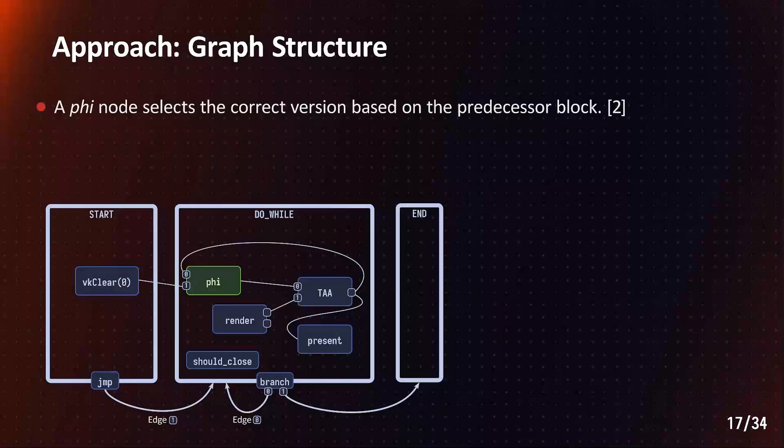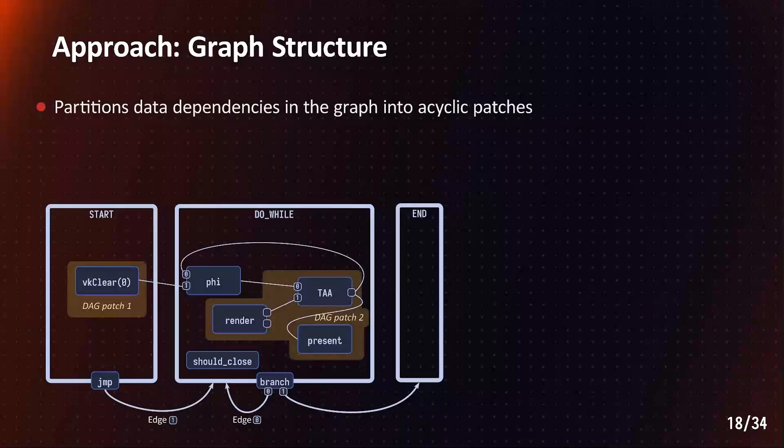For these cases, we follow traditional compiler theory and insert a phi node in these places. This phi node selects the correct output based on the control flow edge that we use to enter the block. Notably, this phi partitions our cyclic render graph into acyclic patches. And the phi node tells us how to adapt resources when we transition between acyclic blocks. So, in most usage scenarios, it tells us which bindings need an update.